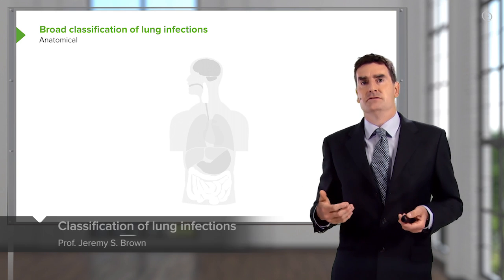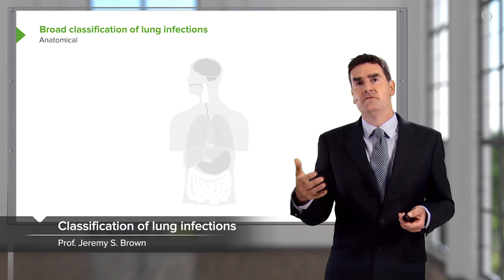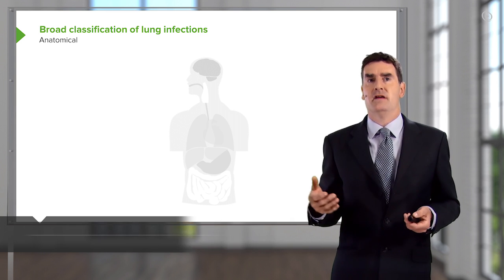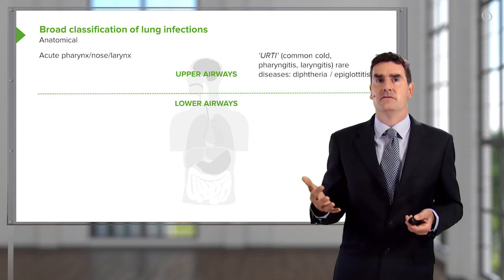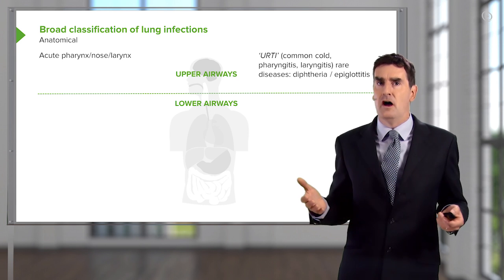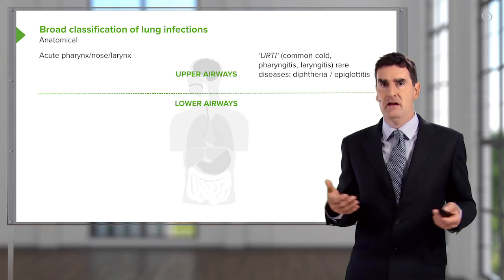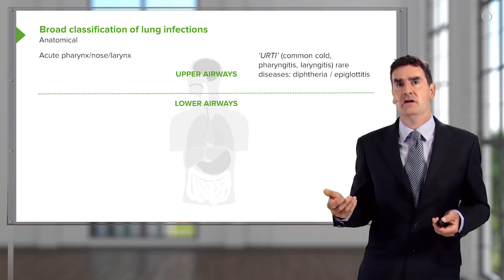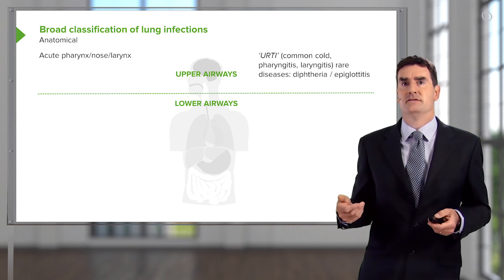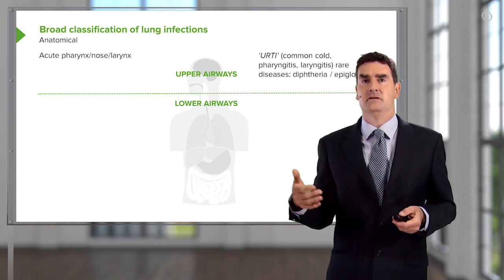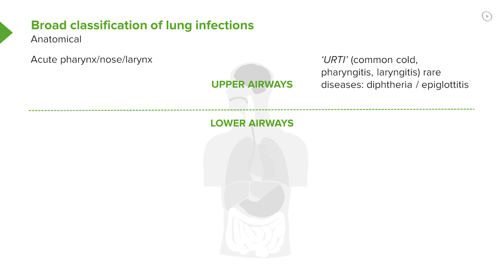When we're talking about lung infections, we define the infection by the site. So that means that if you have an infection of the pharynx, the nose, or the larynx, that's called an upper respiratory tract infection. That's usually the common cold or viral infection that we've all had repeatedly in our lives. There are occasional rare diseases caused by bacteria, such as diphtheria and epiglottitis.